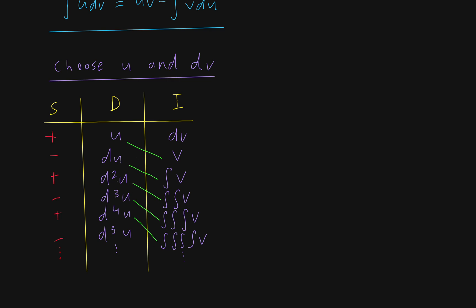If you keep applying it multiple times, you get this repeating pattern. Based on the original formula, a single row is still an integral, while the diagonal products are already anti-differentiated terms. So you start with u times v minus the integral of v du, and this keeps applying as you go down. The key is: the products of the diagonals are summed as you go down, and the same row represents an integral with the given sign.